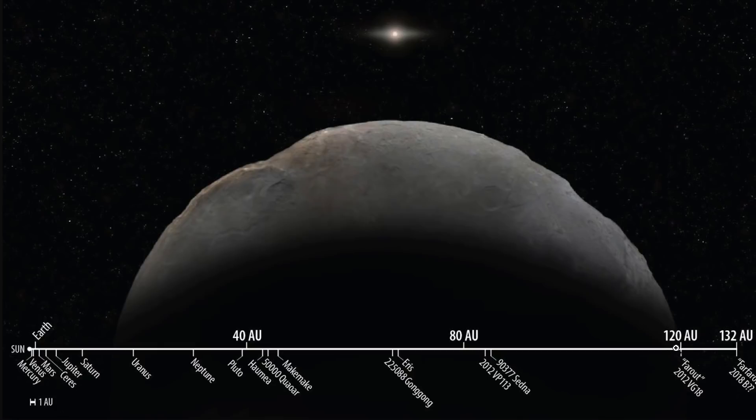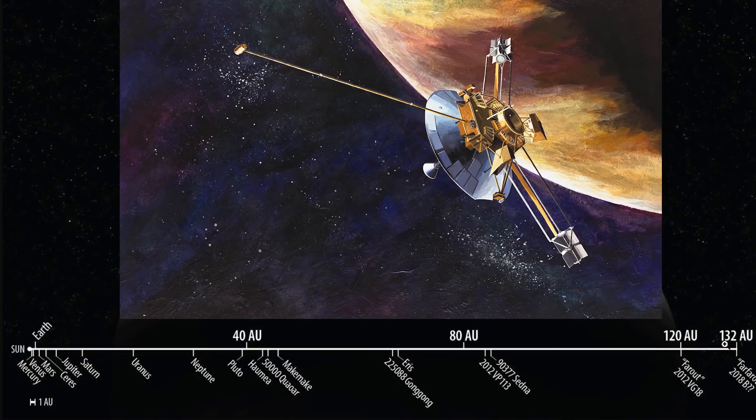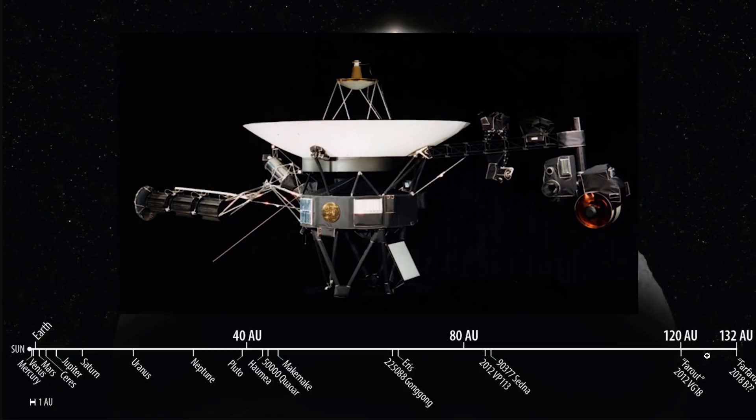This is the far out object I mentioned in the beginning, and this is the newly confirmed far far out. Now the Pioneer probe is at a distance of about 128 astronomical units, which is somewhere right here, with the Voyager 2 being at 127, which is somewhere right before it.